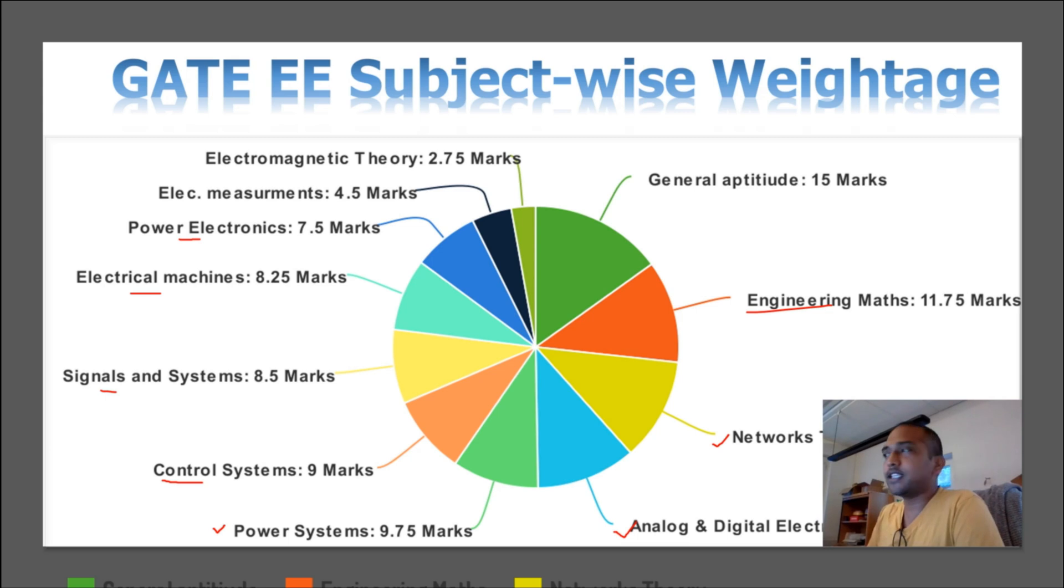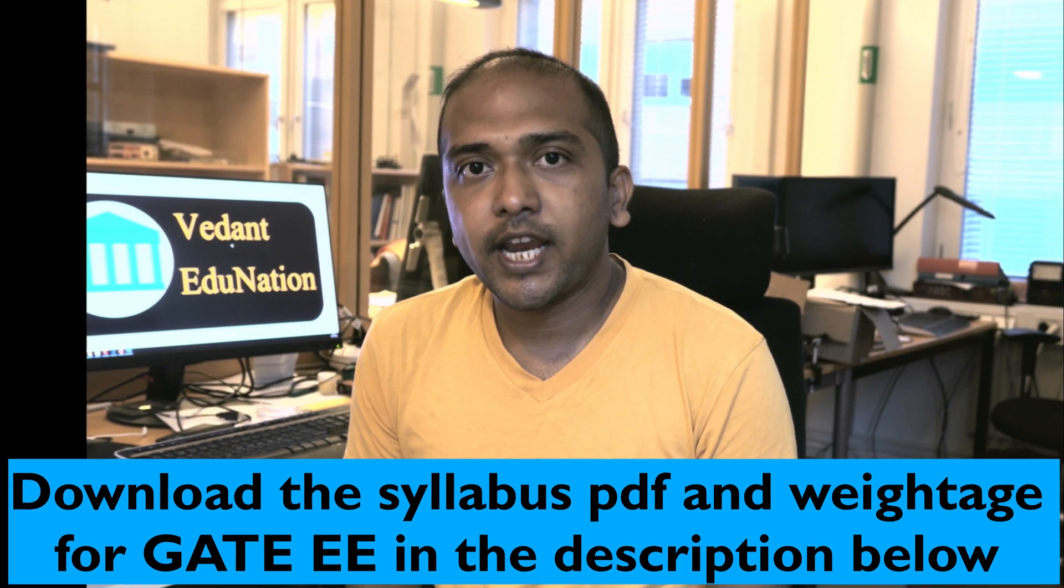So from this, you can see that network theory and analog and digital electronics have the highest weightage in terms of marks, and then you have power systems and control systems. Electromagnetic theory is quite low, around 3 marks every year. Please note that this weightage changes every year. Some of the subjects are given more weightage in some years, and hence, it's better to study all the topics equally well. So that was the syllabus for GATE Electrical Engineering.